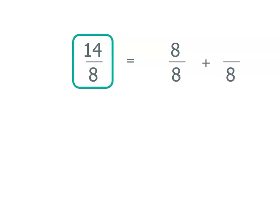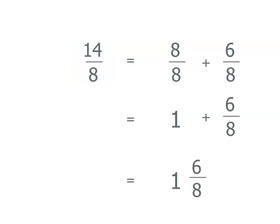Now, we had 14 eighths, so what we need to do is see how many eighths we've got left. 14 minus eight is six. So if we take eight eighths out to make our whole, we still have six eighths. So 14 eighths is the same as one plus six eighths, or one and six eighths.